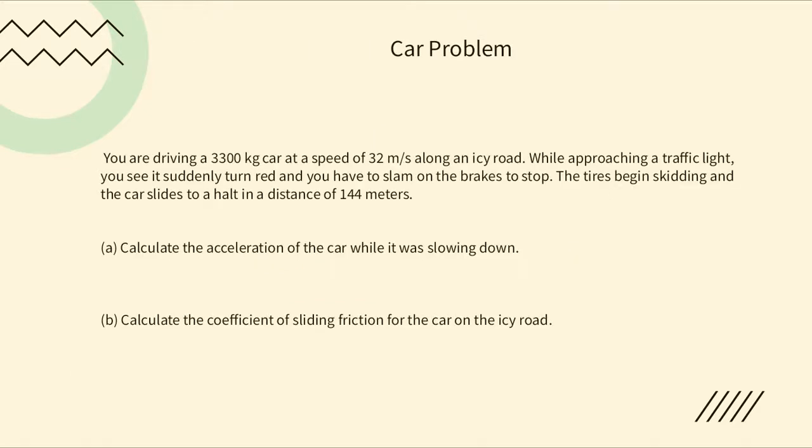For the next problem from the homework: you're driving a 3,300-kilogram car at 32 meters per second along an icy road. Approaching a traffic light, it suddenly turns red and you slam on the brakes. The tires begin skidding and the car slides to a halt in 144 meters. Part a: calculate the acceleration while slowing down. Part b: calculate the coefficient of sliding friction for the car on the icy road.